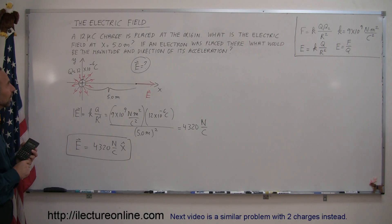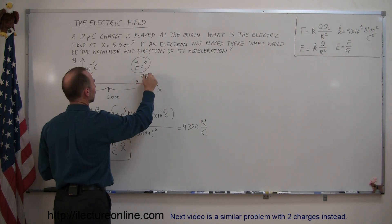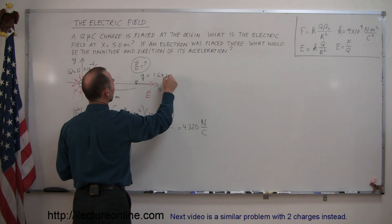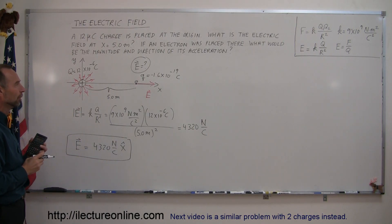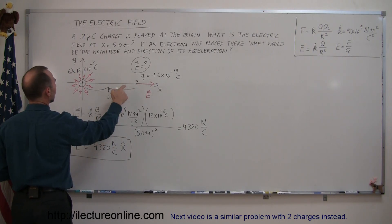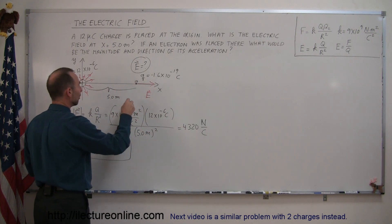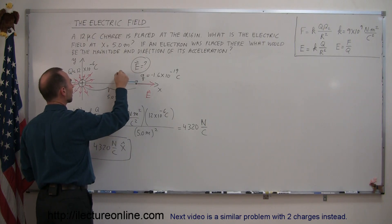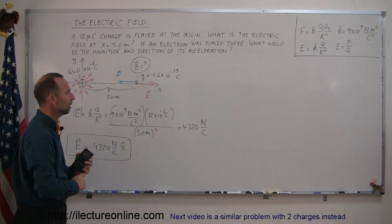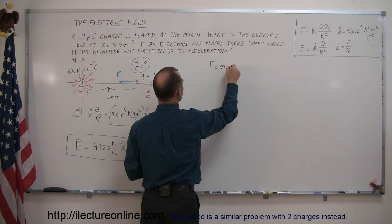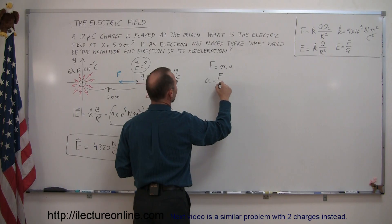For the second part of the problem, we place an electron at that location. The electron has charge q equals 1.6 times 10 to the minus 19 coulombs. Since the electron is negatively charged and the source charge is positive, there is a force pulling the electron to the left, giving it an acceleration. From Newton's second law, F equals ma, so the acceleration equals force divided by mass.